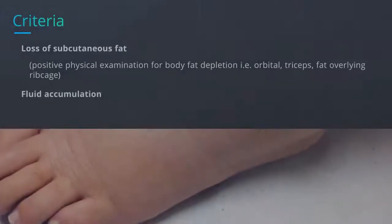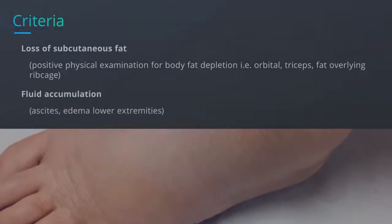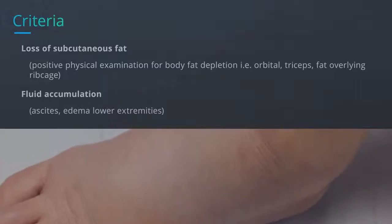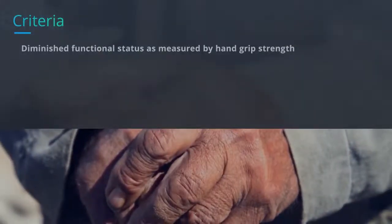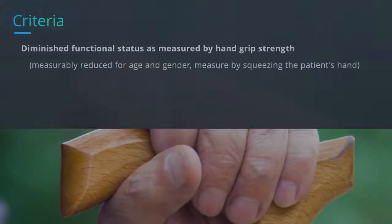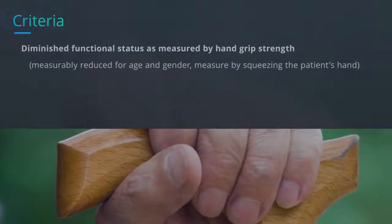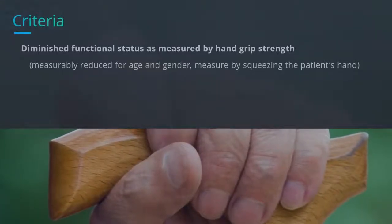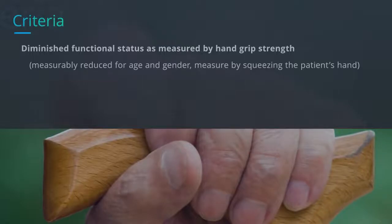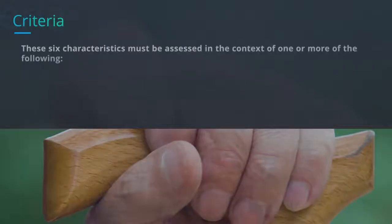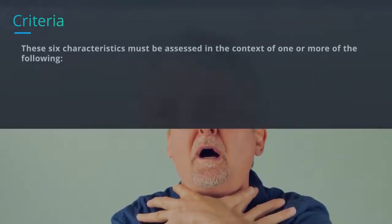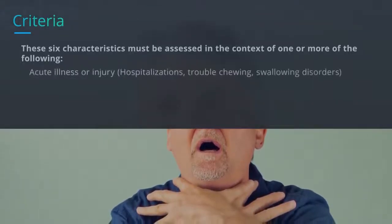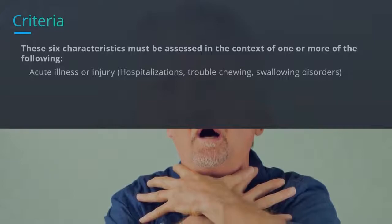Further characteristics include loss of subcutaneous fat — a positive physical examination for body fat depletion such as orbital, triceps, fat overlying the rib cage; fluid accumulation such as ascites or edema in the lower extremities; and diminished functional status as measured by hand grip strength, which is measurably reduced for age and gender. These six characteristics must be assessed in the context of one or more of the following: acute illness or injury, or hospitalizations.